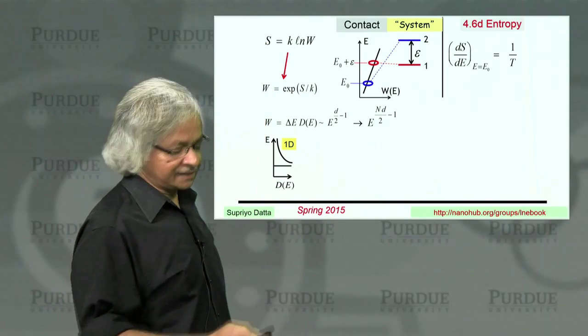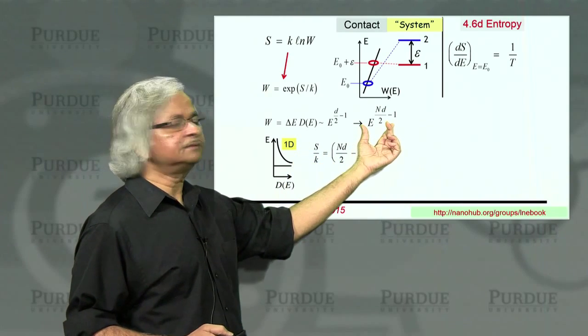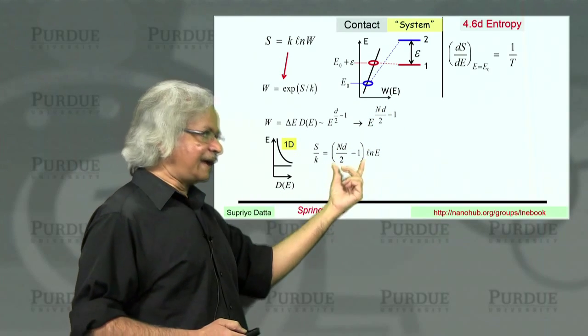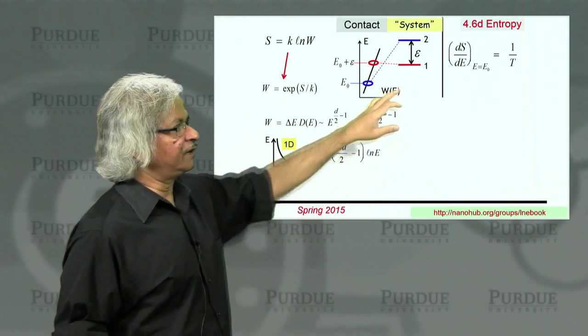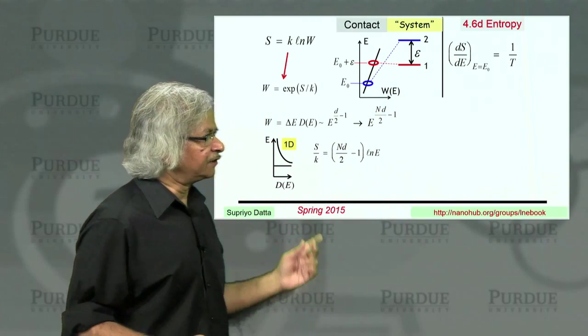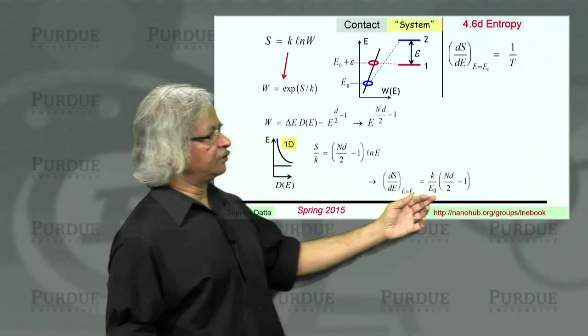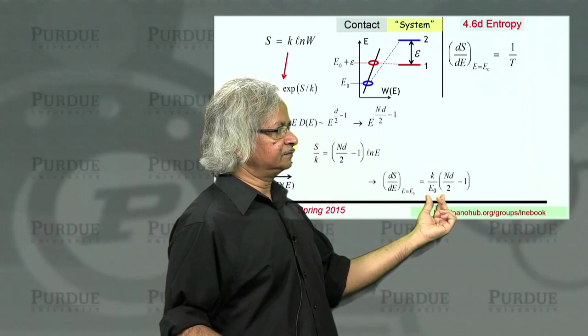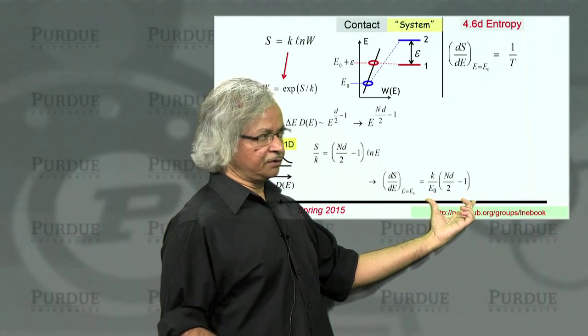What about entropy? Well, that's supposed to be this logarithm. So S over K is the logarithm of that. And when you take logarithm of E to the power alpha, you get the alpha times the logarithm of E. And what we are interested in, what we defined as temperature was this dS dE. So if you take the derivative of this, dS dE, then what you get is, as you know, logarithm, when you take its derivative, you get 1 over E. So when you put E equals E0, you get divided by E0.